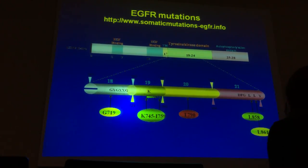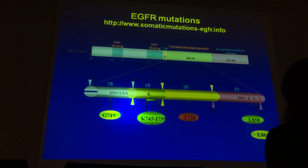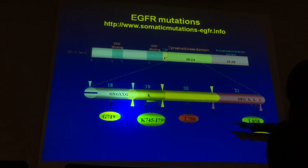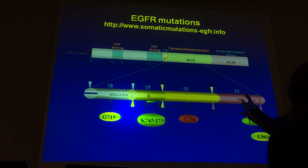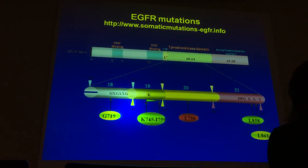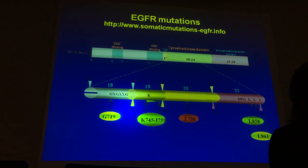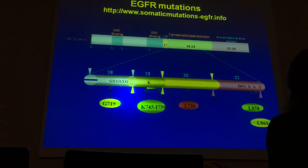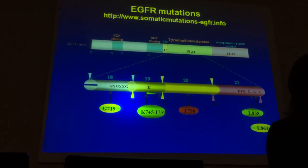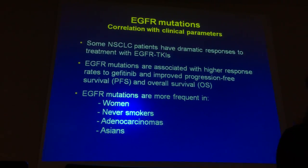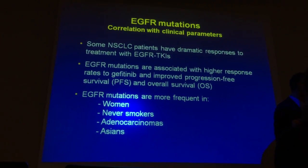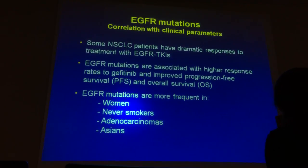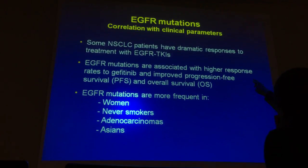For EGF receptor mutations in adenocarcinoma of the lung, one of the most common is the T790M mutation, among others. If these mutations are in the tyrosine kinase domain, signaling is always on — these are activating mutations. Luckily, we now have many tyrosine kinase inhibitors that can specifically target the EGF receptor and switch off the signal. Patients with non-small cell lung cancer adenocarcinoma who have this mutation have a very good response to EGF receptor TKIs — better than towards chemotherapy — they live longer and have a better prognosis.